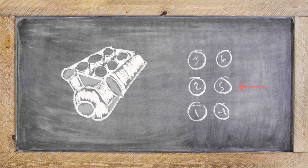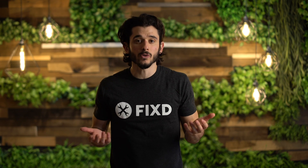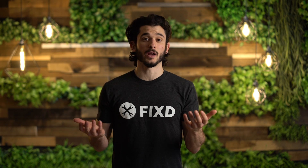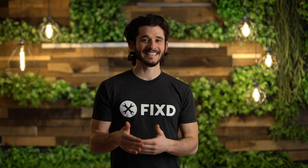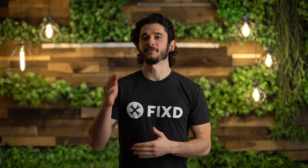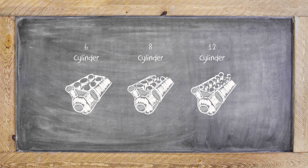P0305 is a specific code for your fifth cylinder. It's the difference between, say, a P0302 and a P0300, which is multiple random misfires. Since this code is in that fifth cylinder, this means it only applies to V6, V8, or V12 engines.